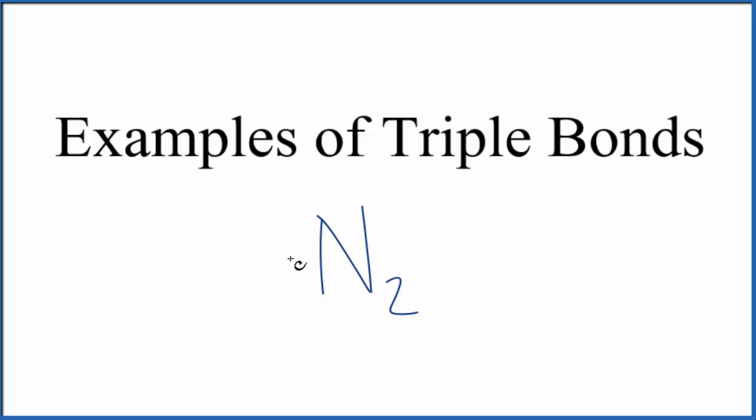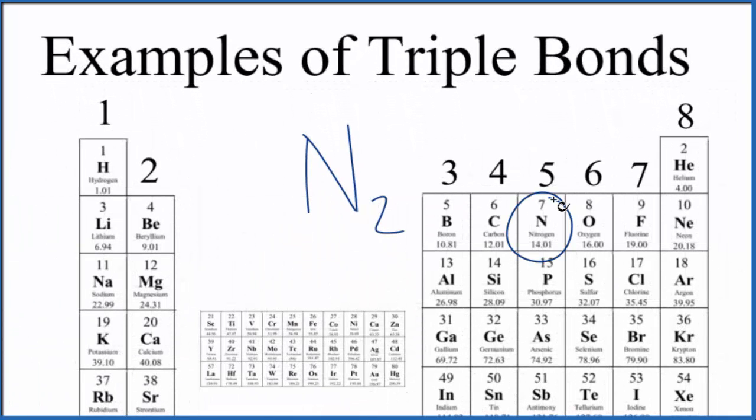Nitrogen on the periodic table right here, it's in group 15. Elements in group 15 have five valence electrons. These are electrons in the outer shell. They're the ones available to form chemical bonds.